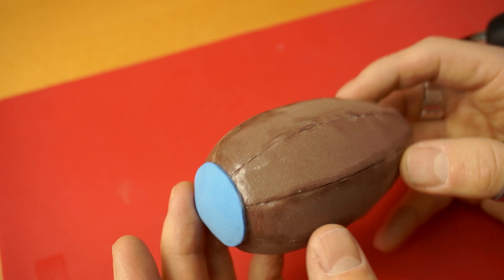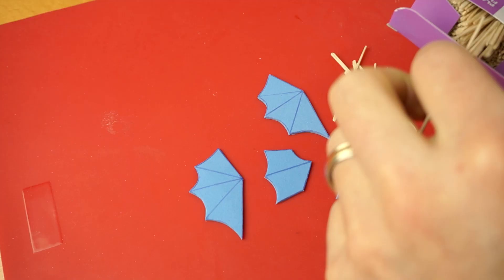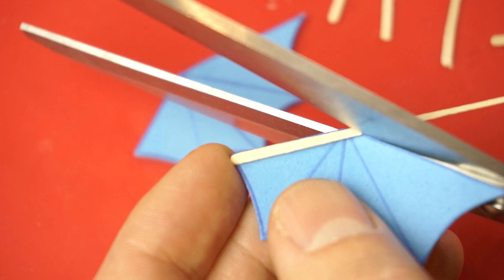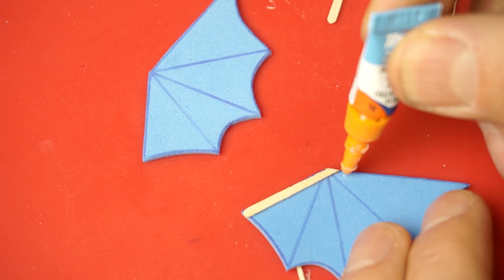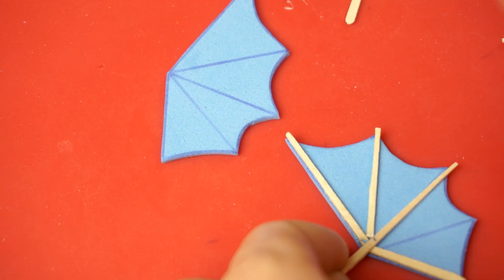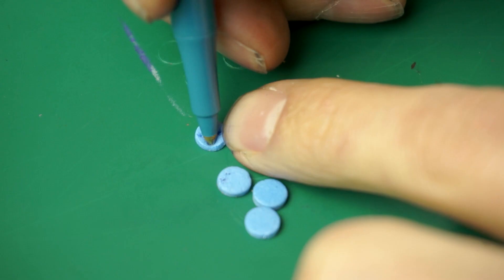And now it's toothpick time. You can glue the toothpicks onto the wings to look like little struts. You can cut the toothpicks to the right size with a nice pair of scissors. I'm using super glue here because it's quick and easy. Add struts to both sides of each fin.